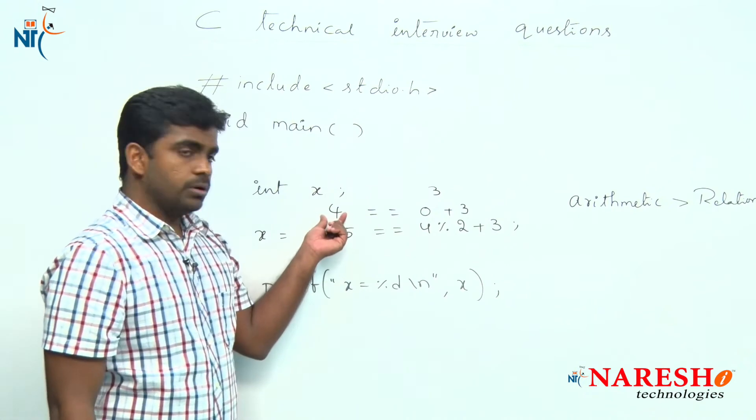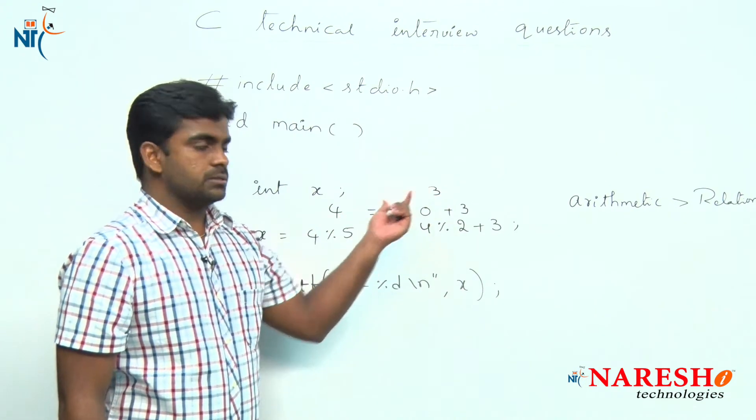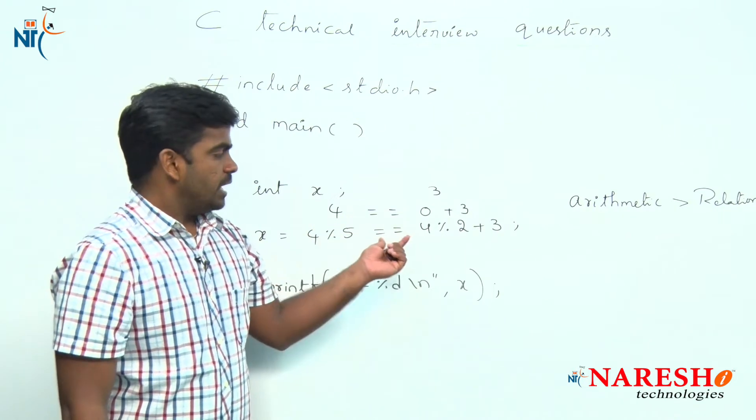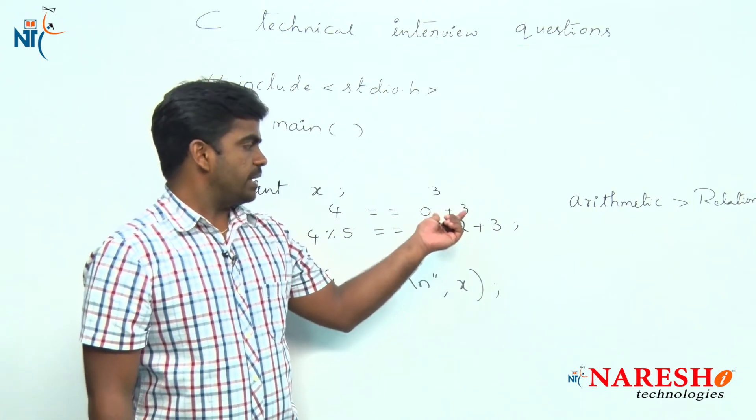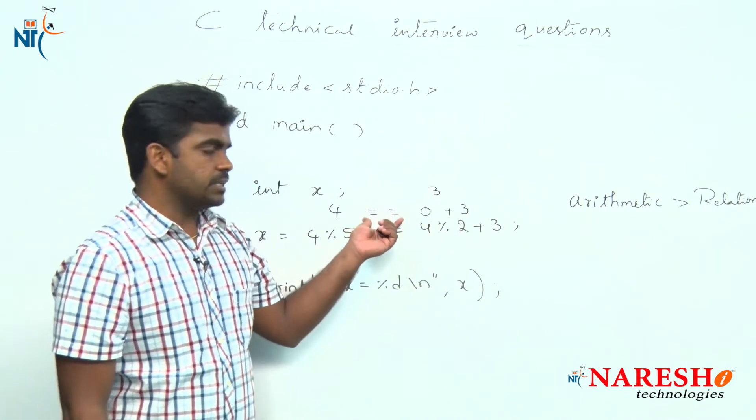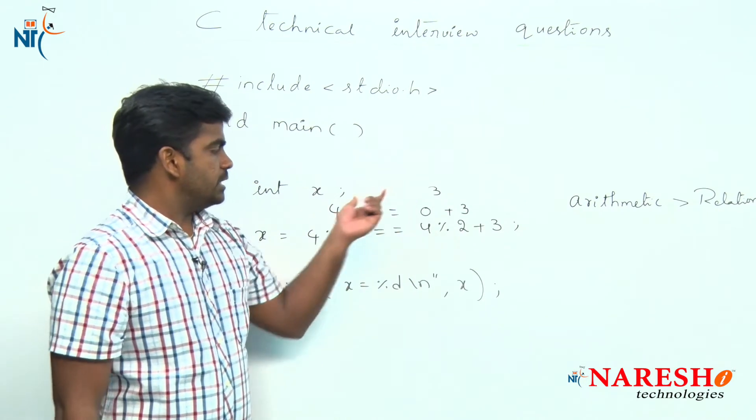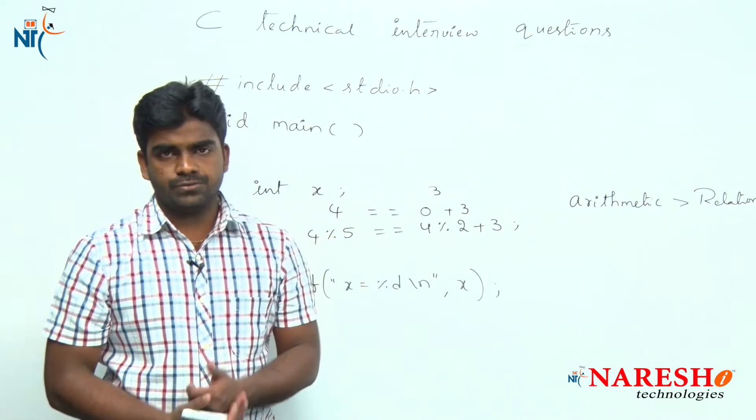Now here observe, 4 equals to 3. The left side expression is giving the value 4 and the right side expression is giving the value 3. Now it will check the relation among these two expressions. What is that relation? 4 equals to 3, the condition has failed.